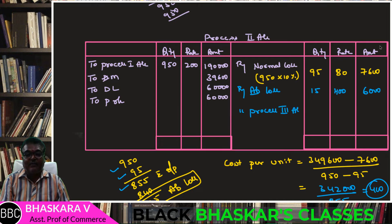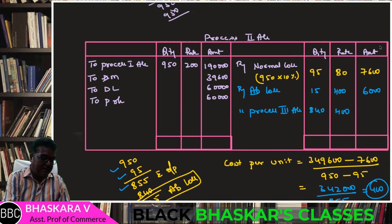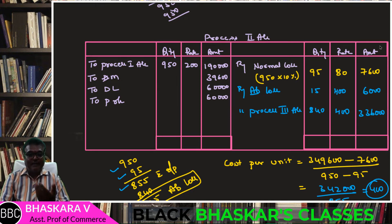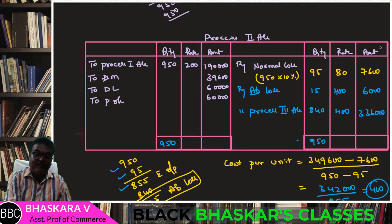Process 3 receives 840 units from Process 2 at 400 per unit = 3,36,000. Total units balance: 95 plus 15 plus 840 = 950, which is correct.